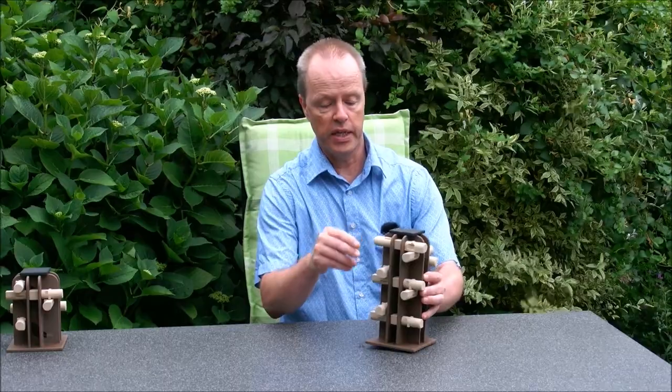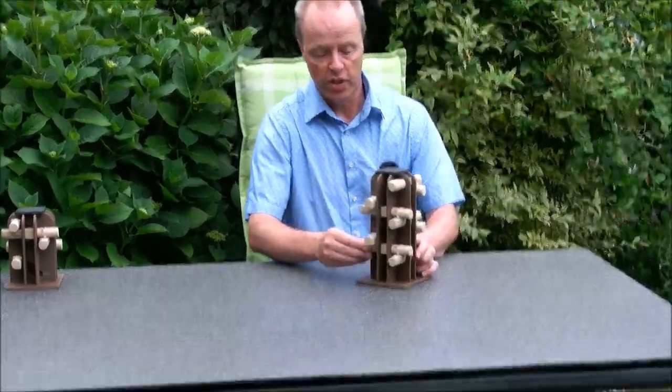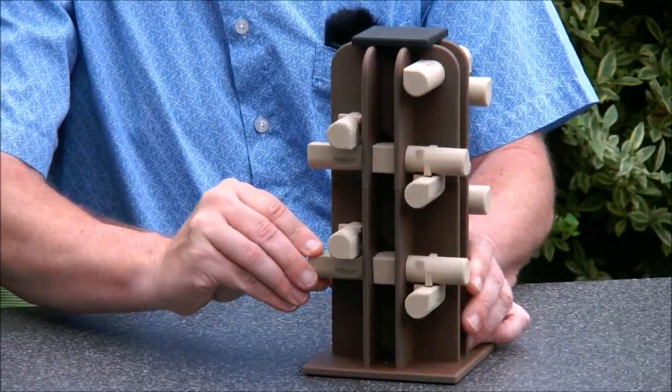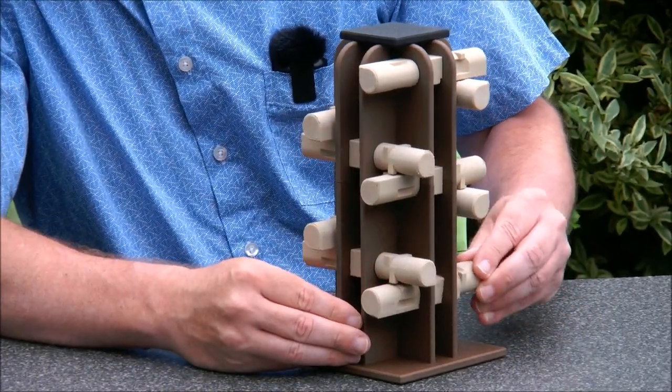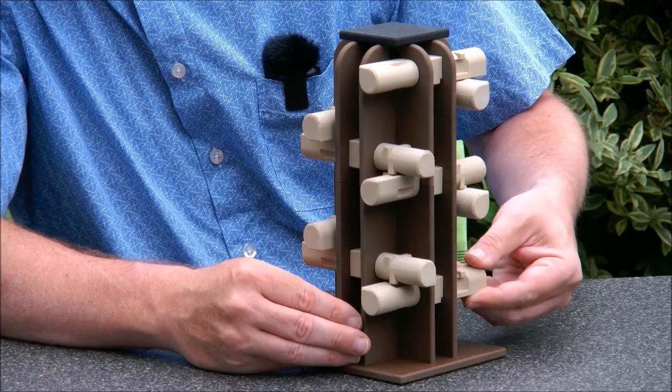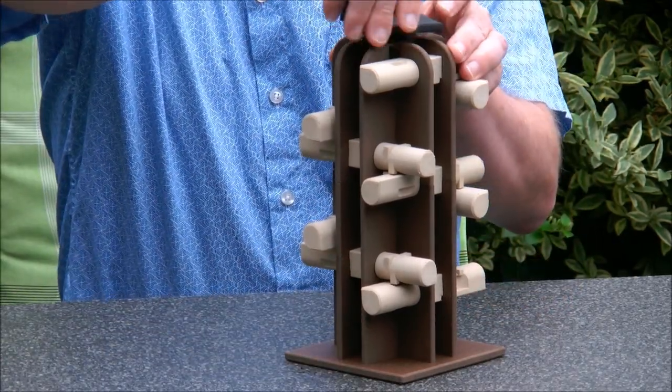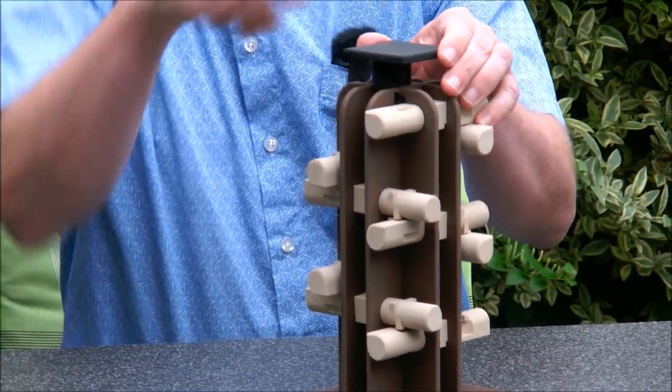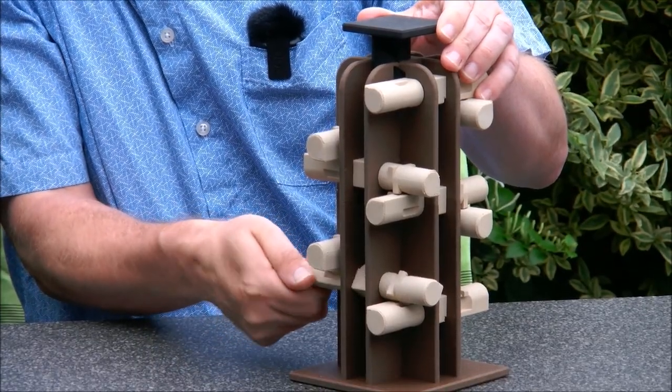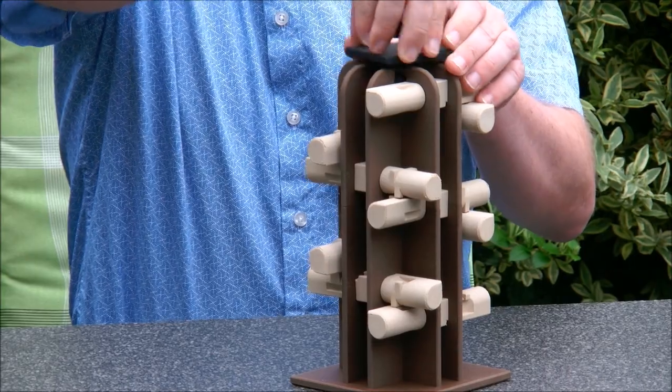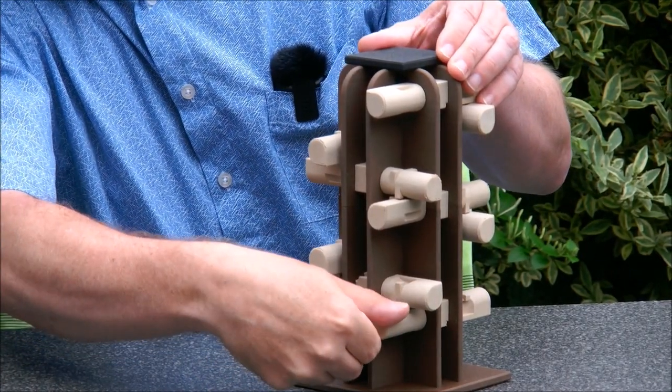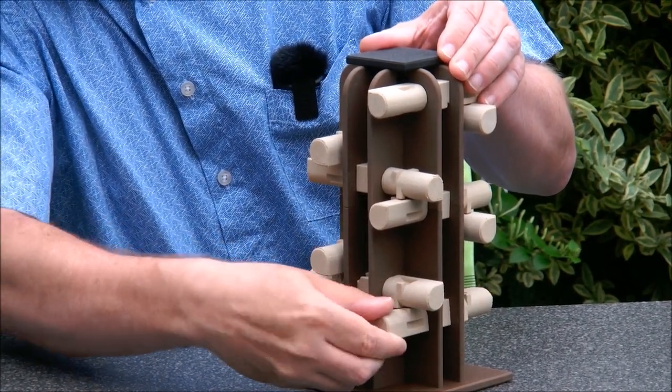So when we are trying to solve this, the first step is to turn the lowest rod by three steps. Then we move the rod one out, then we can move the next pin one step and it blocks. Now we go back again and we move the pin at the bottom back.